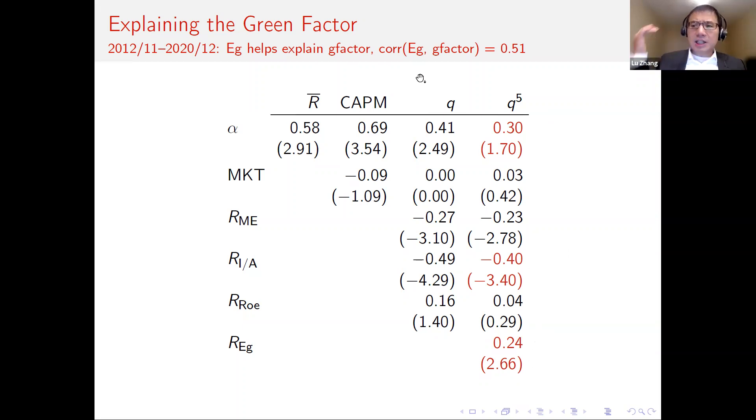On the other hand, if you look at our factor loadings, expected growth factor is the most important part, going in the right direction with 0.24 as the factor loading and T value is 2.7. In the sample, the correlation between our expected growth factor and the green factor is 51%. If our expected growth factor captures mostly the impact of intangible investment, this would be consistent with the prior table, the evidence in Table 1 that I just showed you in the prior slide.